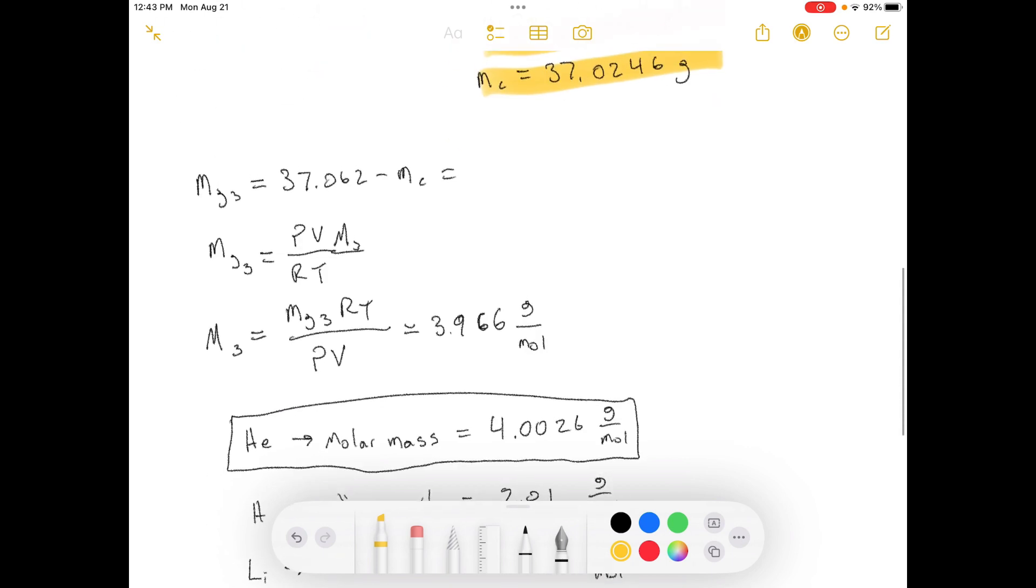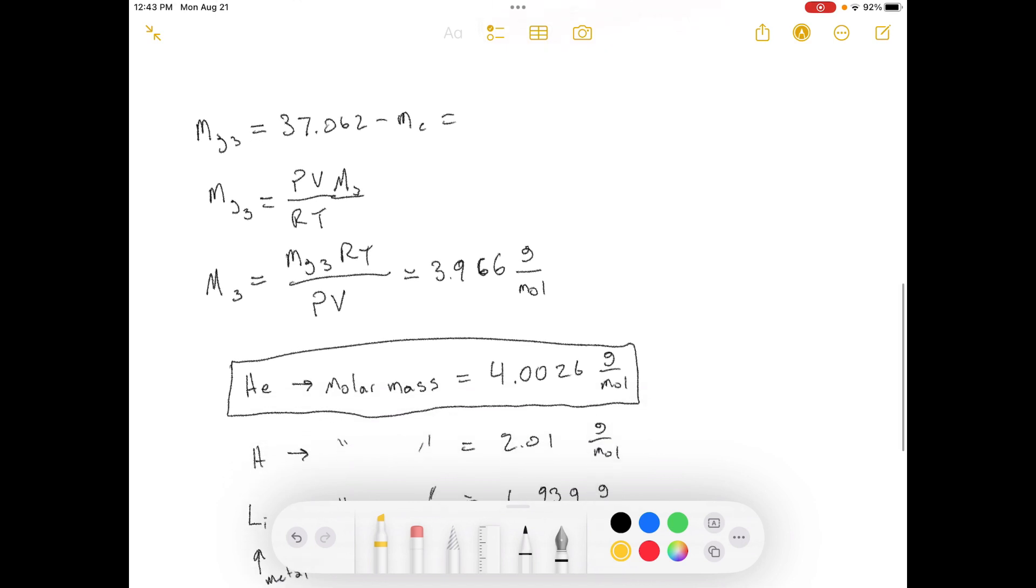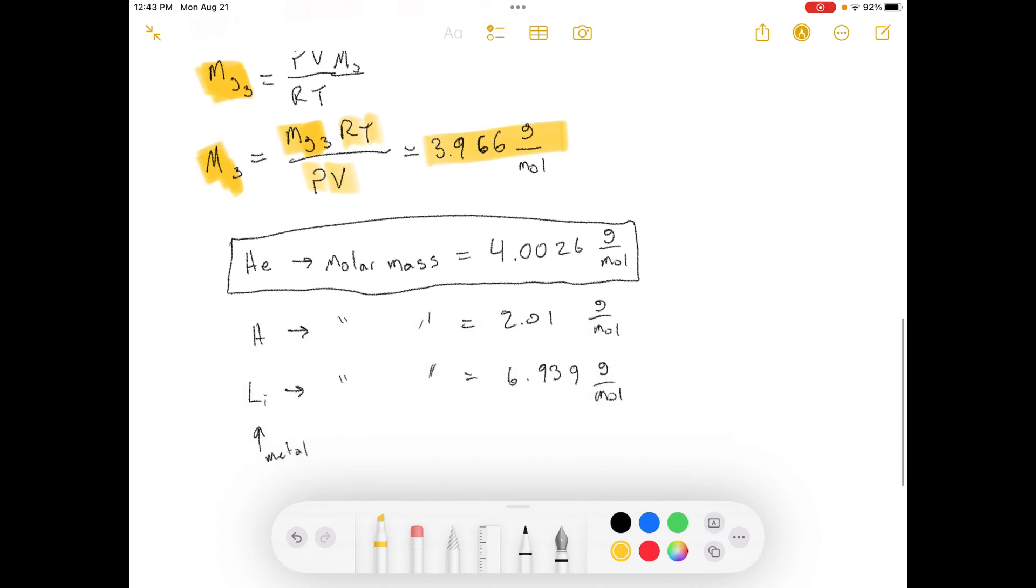Now we move on to the next part where we calculate the mass of gas three and determine its molecular weight so that we can calculate what element it is. So they said it has this much mass. We subtract off the cylinder mass from that. And then we can use this information in order to calculate what the molecular weight is because we know this value from this equation. So we calculate all that out. This is all known and we get that we've got a molar mass of 3.966 grams per mole.